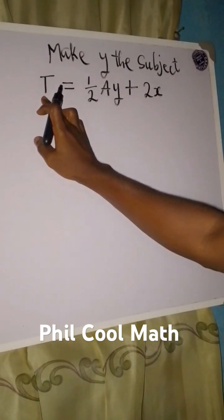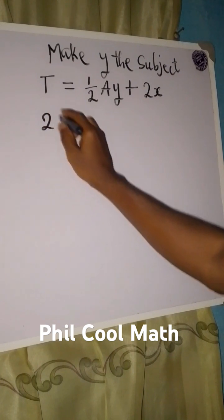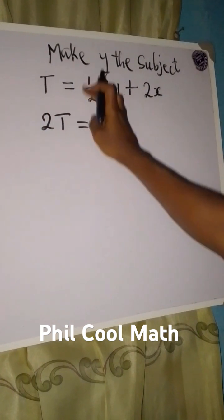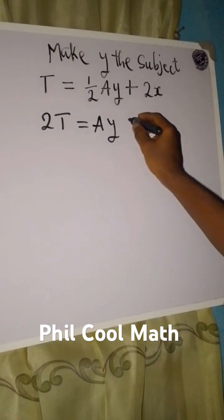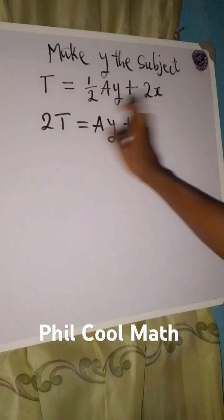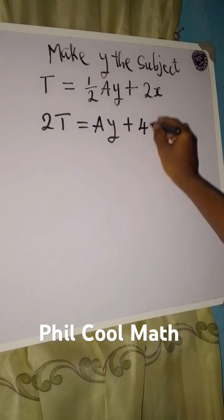So we have 2 times T, that would be 2T. Now 2 multiplied by the whole of this, 2 will cancel itself. So we have Ay and then plus 2 multiplied by 2x will be 4x.